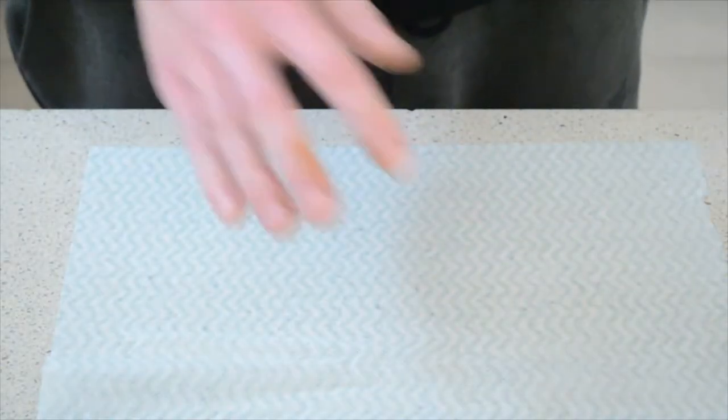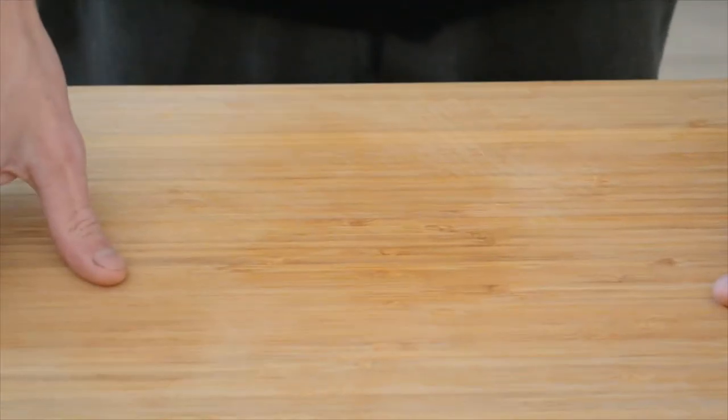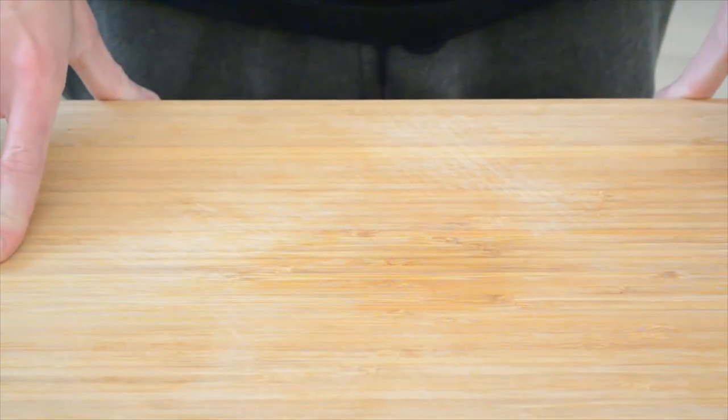The first thing you want to do is get a wet cloth underneath your chopping board. This secures the board in place so you don't get much movement.